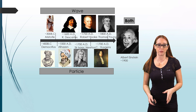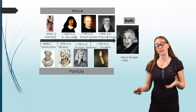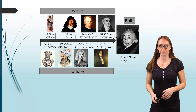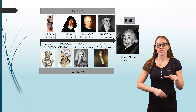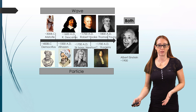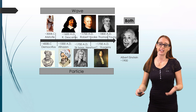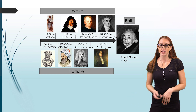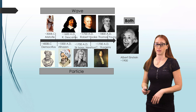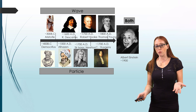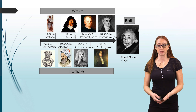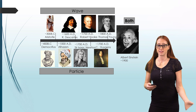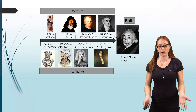We're going to move up to where we start talking about experiments that actually determine the wave and particle-like properties. Once Einstein came along, he kind of solved the debate — at least for now, it appears to be good. He said that light has both wave and particle-like properties, saying it's not one or the other, but rather both. We're going to talk about the two most famous experiments that established this.